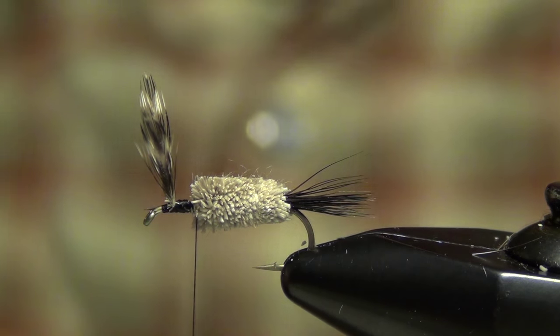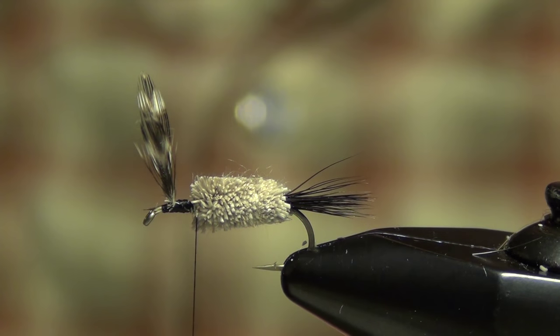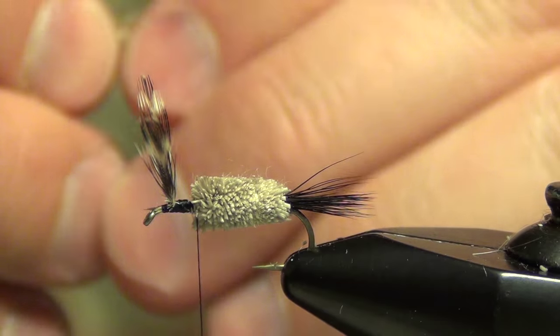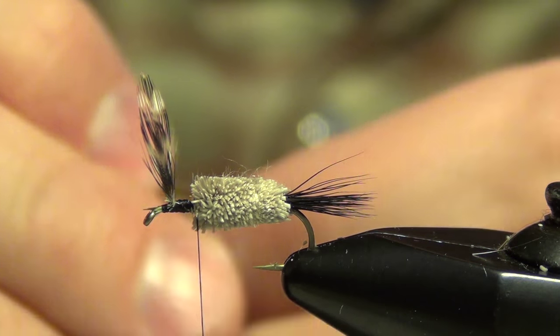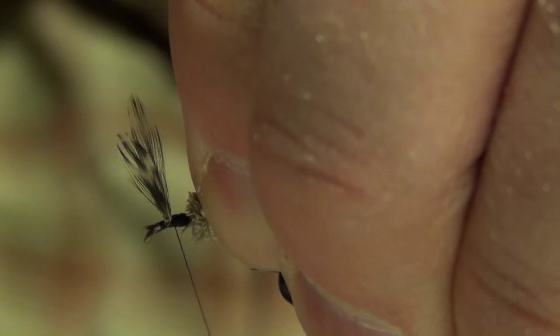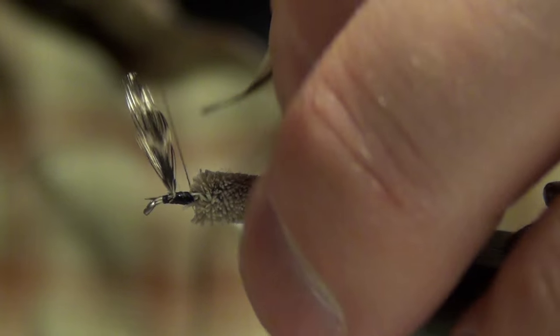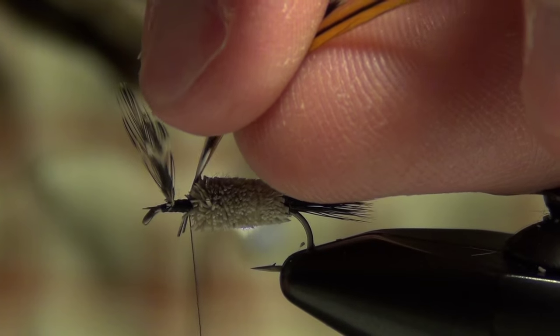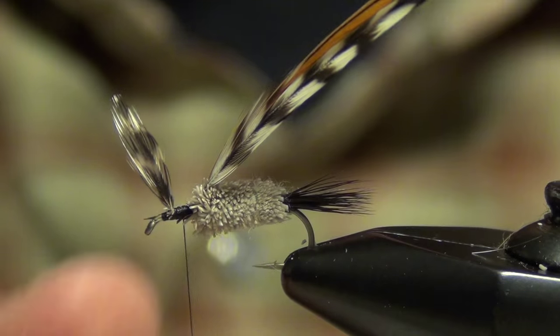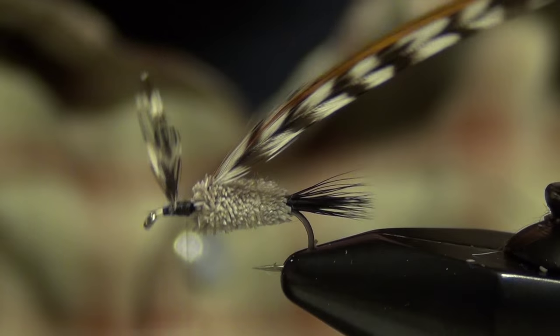Now I'm going to take my thread back to just in front of the body. I'm going to take a brown whiting rooster cape feather, measure it out so it just reaches below the point of the hook, and do the same exact thing with a matching grizzly feather. I'm going to strip off some of the barbs there, just exposing the stem. And I'm going to tie those both in at the same time together. Trim out those extra quills and lay down a nice smooth thread base for that hackle to wrap forward on.